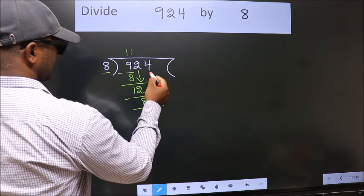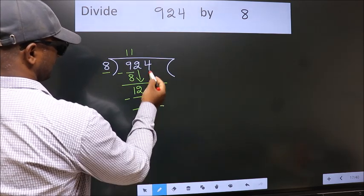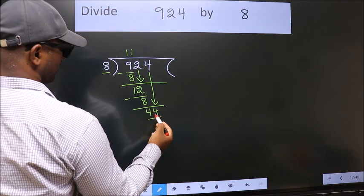After this, bring down the beside number. So, 4 down. So, 44.